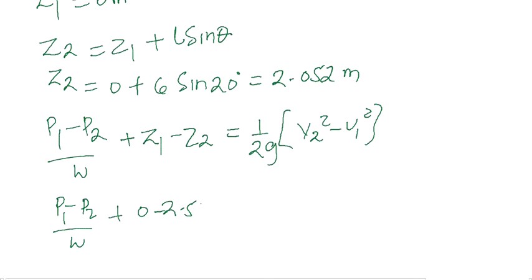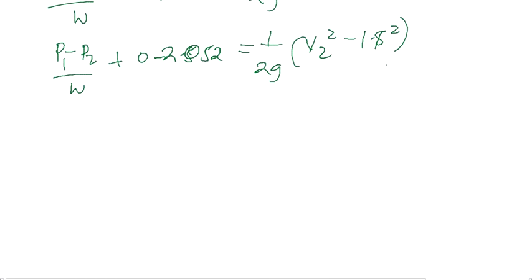Substituting the information that we have, the pressure difference P1 minus P2 divided by the specific weight of the fluid plus 0 minus 2.052 equals 1 over 2g into V2 squared minus 1.8 squared. Let's call this equation 1.